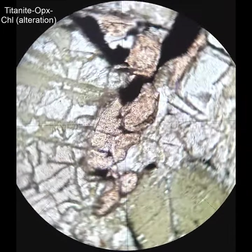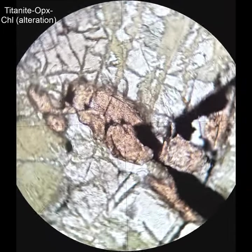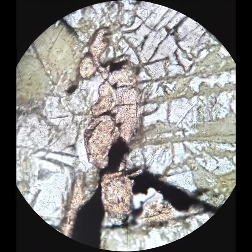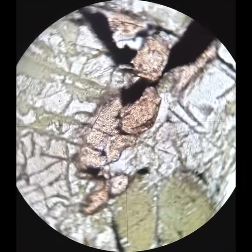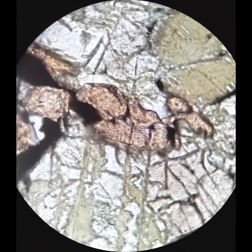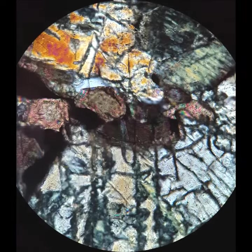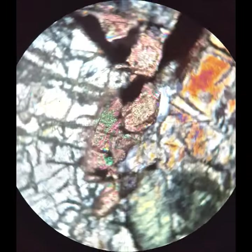Well, this is the only truly pleochroic titanite I have ever seen. It seems to have this kind of pinkish pleochroism, a little bit like orthopyroxene in a way, much higher relief, and when you cross the polars, you'll see much, much higher interference colors.